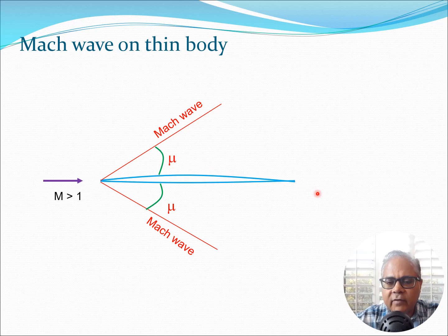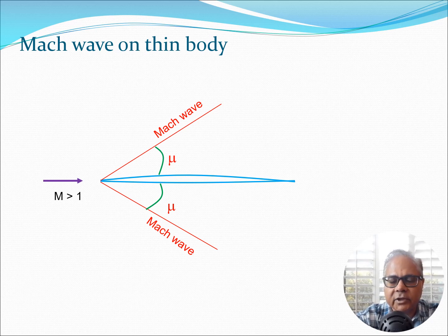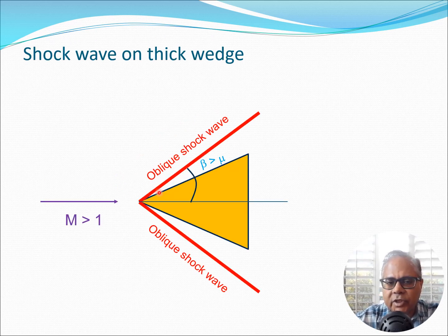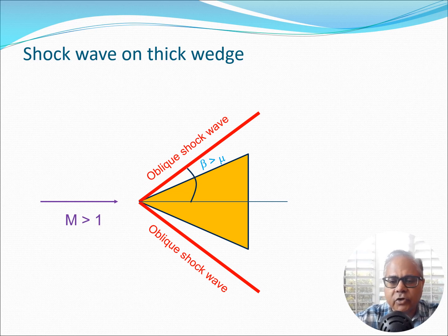Whenever we are going at higher than sonic speed, we choose bodies such as those with sharp points, and therefore the Mach wave is a relatively weak disturbance. However, if we were to choose a thicker wedge, then an oblique shock wave is going to form and the angle beta is going to be greater than mu. So whenever you are creating a thick wedge, you will get an oblique shock wave which is stronger than the Mach wave.